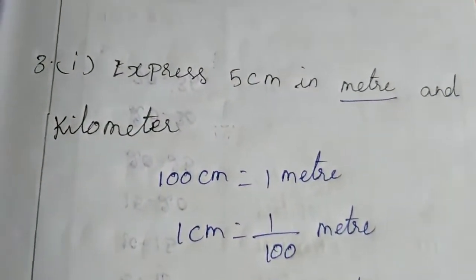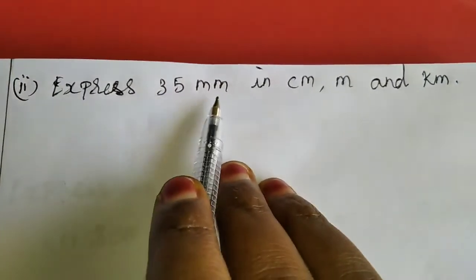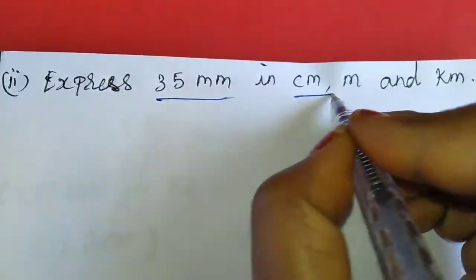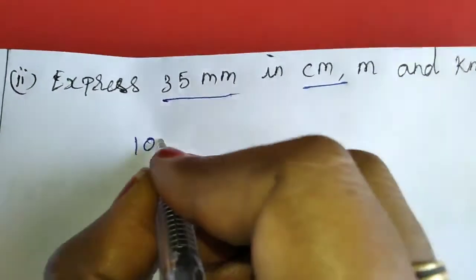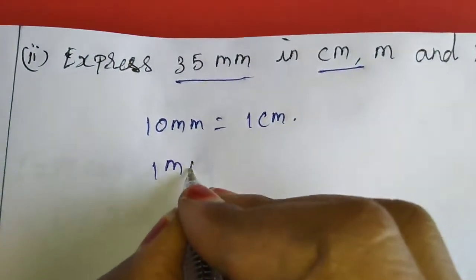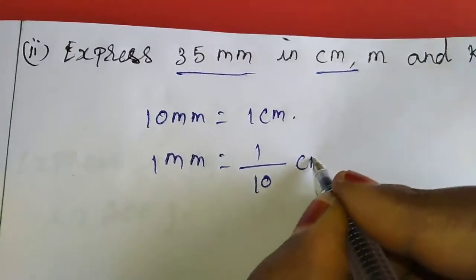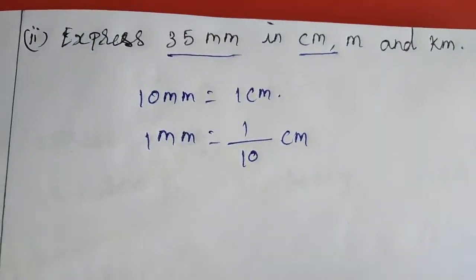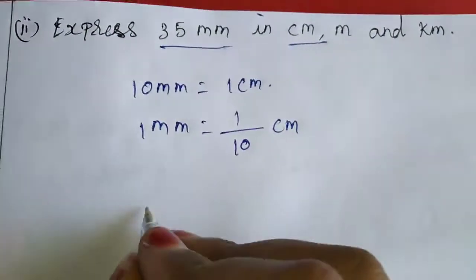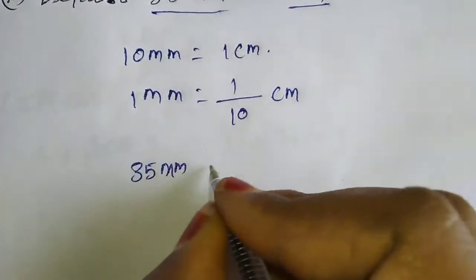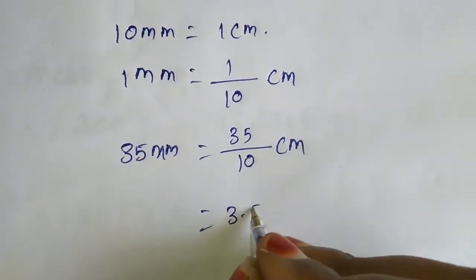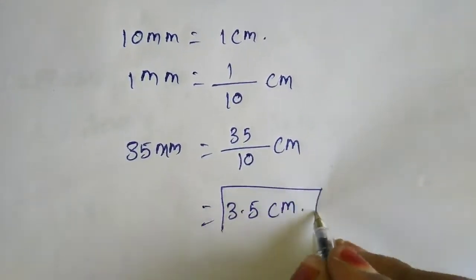Now I am going to the second subdivision: express 35 millimeters in centimeters, meters, and kilometers. First, expressing in centimeters: 10 millimeters equal to 1 centimeter, so 1 millimeter equals 1/10 centimeter. Millimeter is the small lines between centimeters on a scale — there are 10 between each centimeter. So 35 millimeters equals 35/10 centimeters, which we write as 3.5 centimeters.